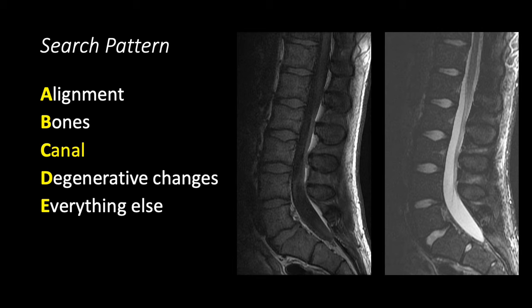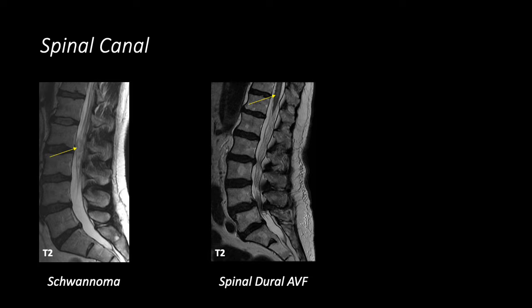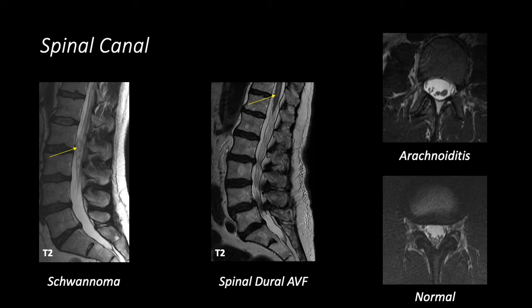The next thing we want to look at is the spinal canal, including the epidural space — which is best assessed on T1-weighted images — as well as the contents of the canal such as the CSF, the distal cord, the conus medullaris, and the cauda equina. Some findings in the spinal canal are obvious, such as a schwannoma presenting as a mass inside the thecal sac. Some are more subtle, such as edema within the conus medullaris in a patient with a spinal dural arteriovenous fistula. We also want to look at the cauda equina to make sure they're normal. An example of arachnoiditis shows aggregation and clumping of nerve roots of the cauda equina.